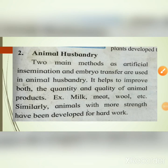Animal husbandry: two main methods, artificial insemination and embryo transfer, are used in animal husbandry. It helps to improve both the quantity and quality of animal products such as milk, meat, and wool. Similarly, animals with more strength have been developed for hard work.